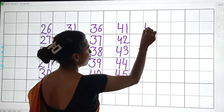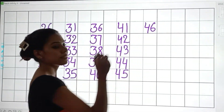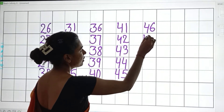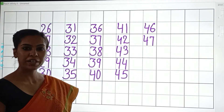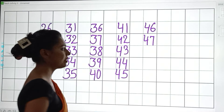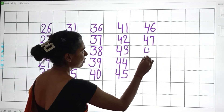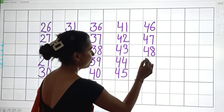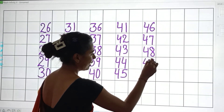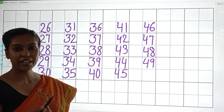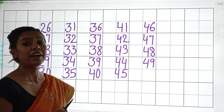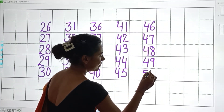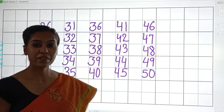4, 6 — 46. 4, 7 — 47. 4, 8 — 48. 4, 9 — 49. 5, 0 — 50.